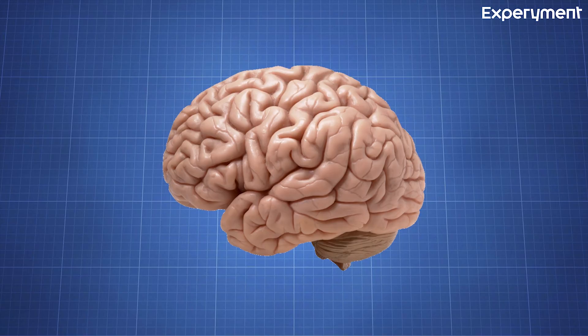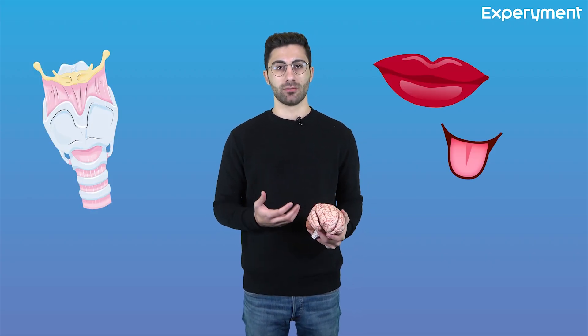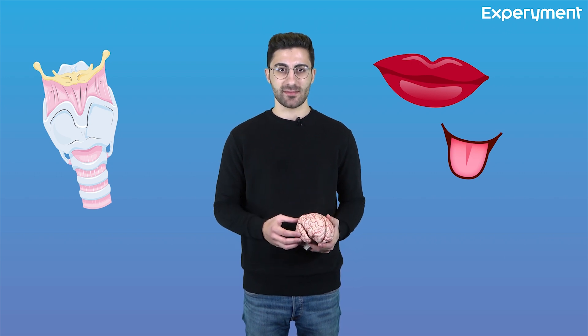Another region is Broca's area which is located near the primary motor cortex. Here is where the motor patterns for the control of the larynx, lips, tongue and other accessory muscles of speech are planned.